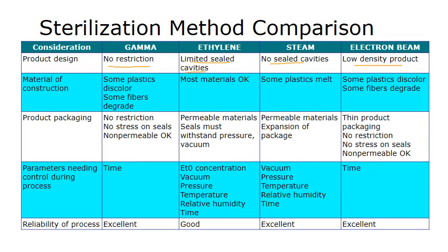For electron beam, it has to be a low-density product, so electron beams don't penetrate as well as gamma. With gamma, some plastics can discolor and some fibers can degrade, which are disadvantages.